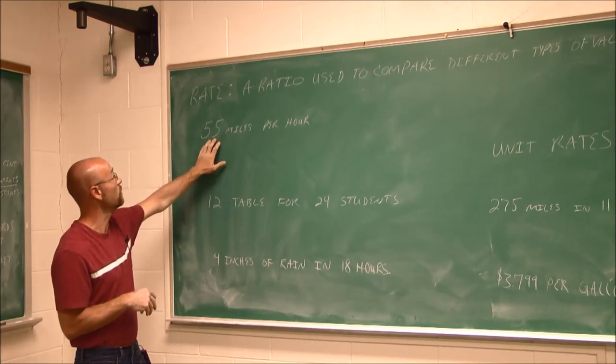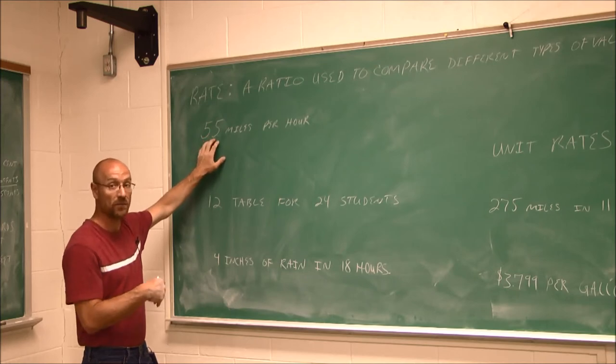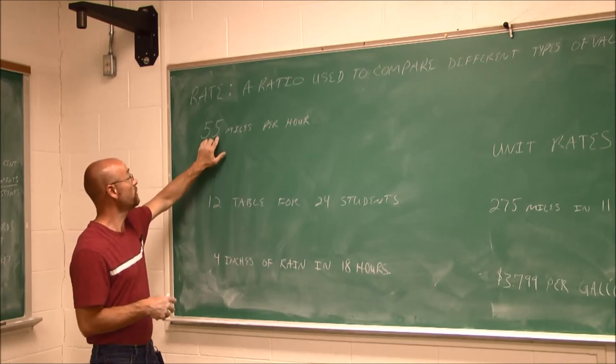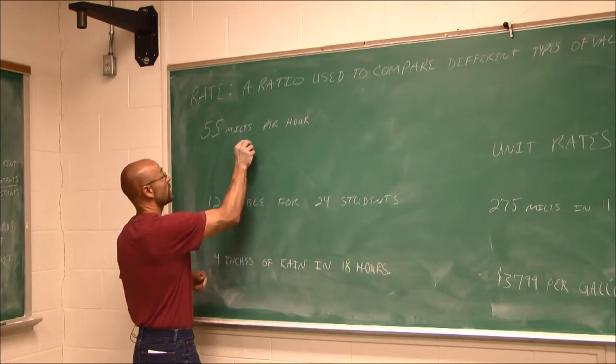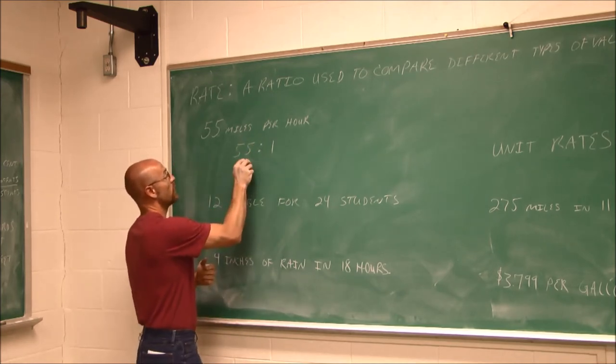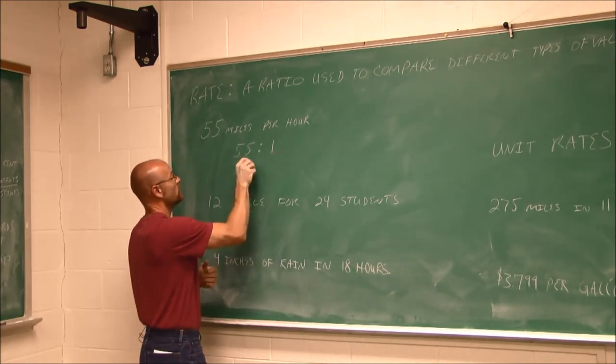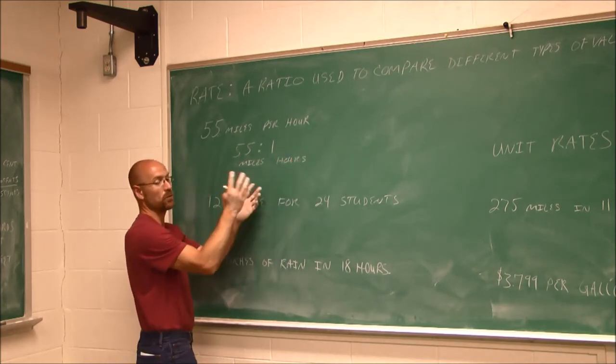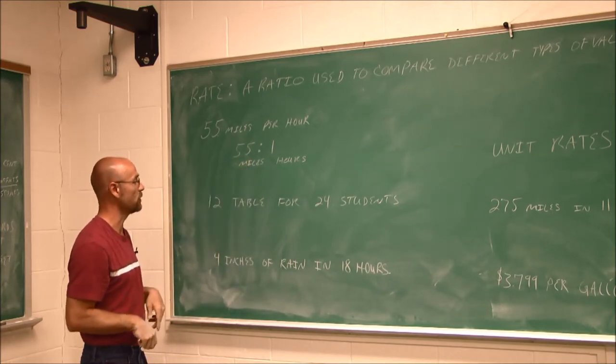One example of a rate that we see on a regular basis, anyone who drives or has ridden in a car knows that we measure our rate of speed in miles per hour. So this is a ratio, 55 miles for every one hour. So I could write this as 55 to 1, but I have to be aware that there are miles to hours. These units, we cannot convert them. We can't write this as a unitless number, because it's a rate. Rates have different units.